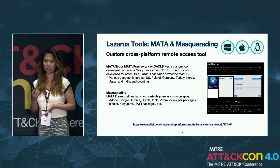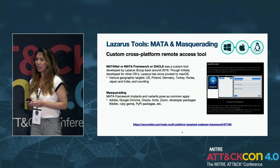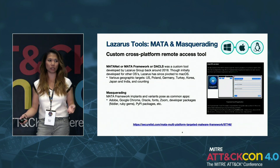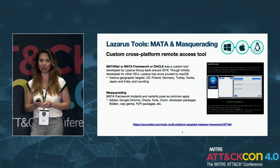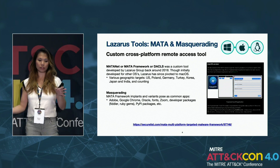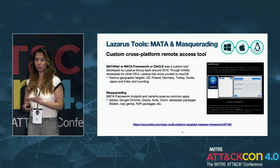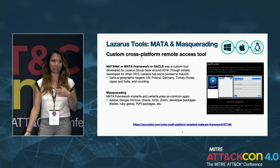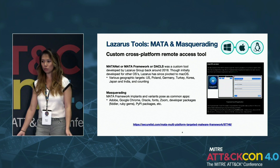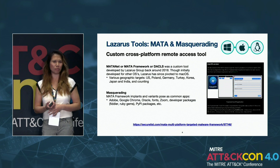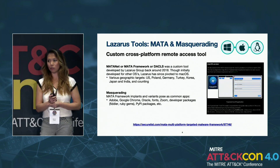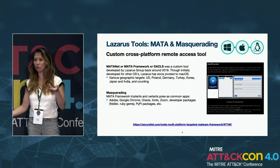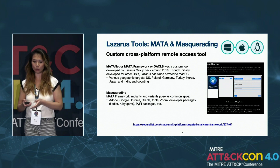As a nation-state, they have the resources to create their own in-house tooling. It's called Mata — also known as Mata Net, Mata Framework, or DACLs. This is a custom cross-platform tool targeting Windows, Mac, and Linux, originally designed for other operating systems with Mac targeting beginning around 2018. They heavily use masquerading: pretending to be cryptocurrency apps, common apps like Google Chrome or Zoom, even fonts, and recently developer packages like Fiddler, RubyGems, and PyPI packages. They've uploaded fake PyPI packages and people download them without checking that they're only two days old with no downloads.